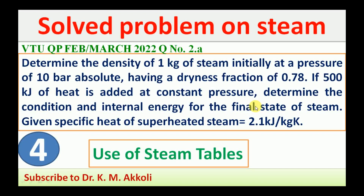Hello everyone. I am going to solve one numerical on steam in this session, that is from the video equation paper PAPMAS 2022, question number 2A. The problem is to determine the density of 1 kg of steam initially at a pressure of 10 bar absolute, having a dryness fraction of 0.78. If 500 kilojoule of heat is added at constant pressure, determine the condition and internal energy for the final state of steam, given specific heat of superheated steam is equal to 2.1 kilojoule per kg Kelvin.